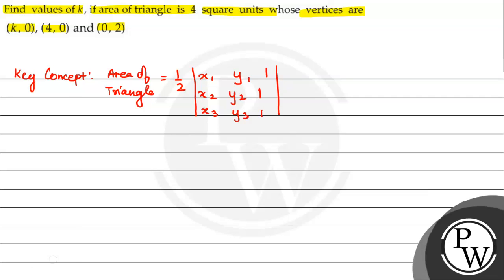Now, let us see, in these coordinates, we have x1 is k, y1 is 0, x2 is 4, y2 is 0, x3 is 0 and y3 is 2.